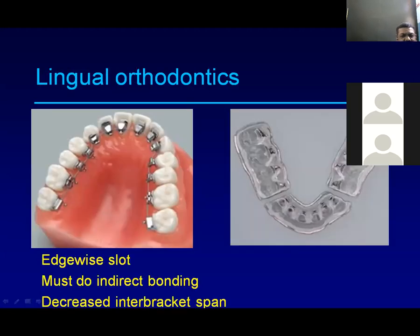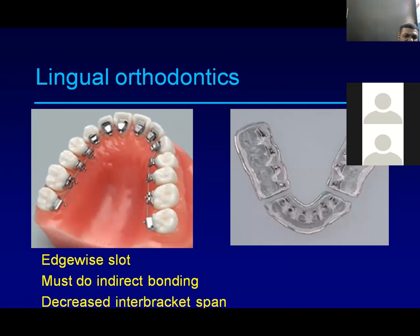The next type in fixed appliances is lingual appliances. The appliances fixed on the buccal surface are known as buccal appliances, and those on the lingual surface are known as lingual appliances. The brackets are placed on the lingual surface of the tooth.